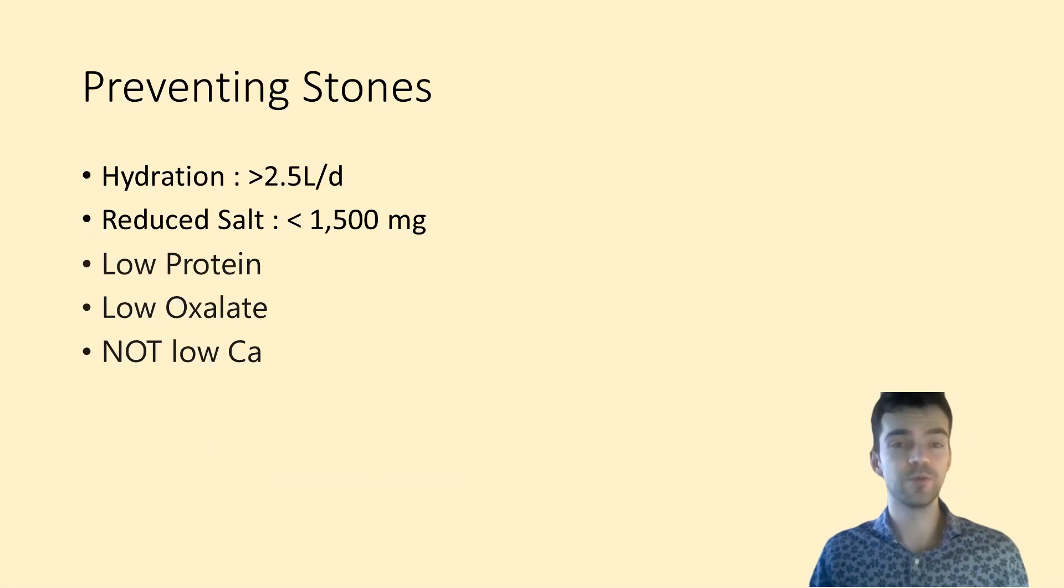Now we move on to the most important slide of this presentation: the preventative measures that can be done to stop stones. Number one is hydration—greater than 2.5 liters of water per day or any fluids. If you're drinking more than that per day, you have more solvent in your body, and with these particles being separated by more water, they're less likely to come into contact and form a stone. Next, reduced salt intake is important because salt actually competes with calcium in the tubule for reabsorption.